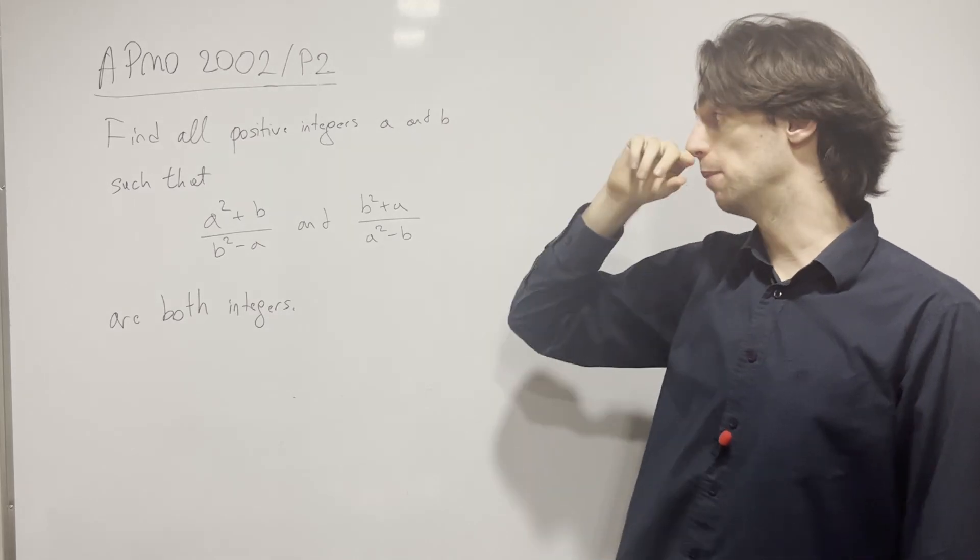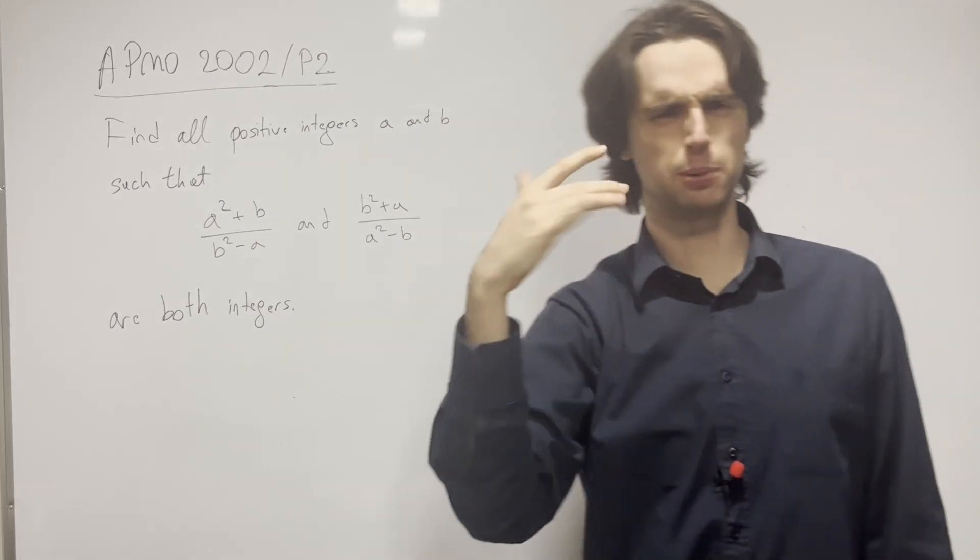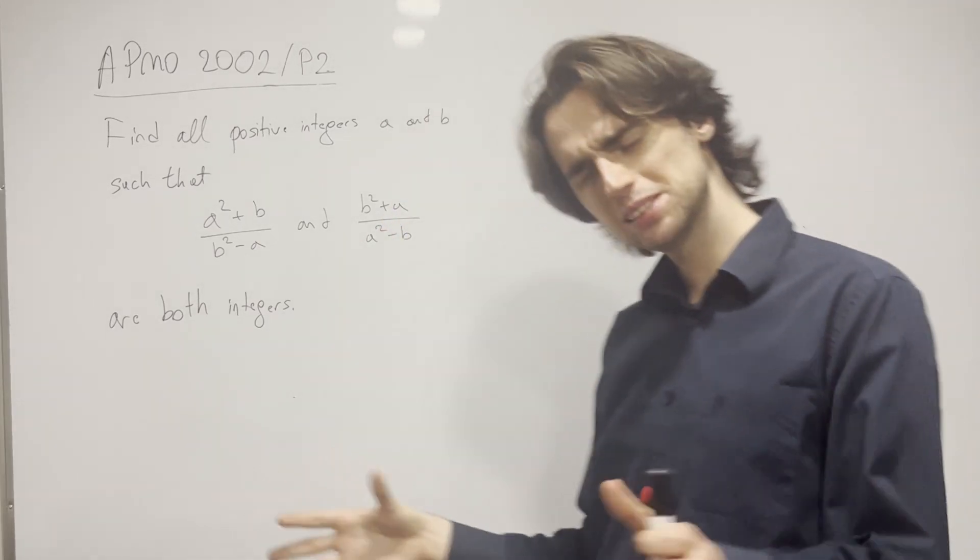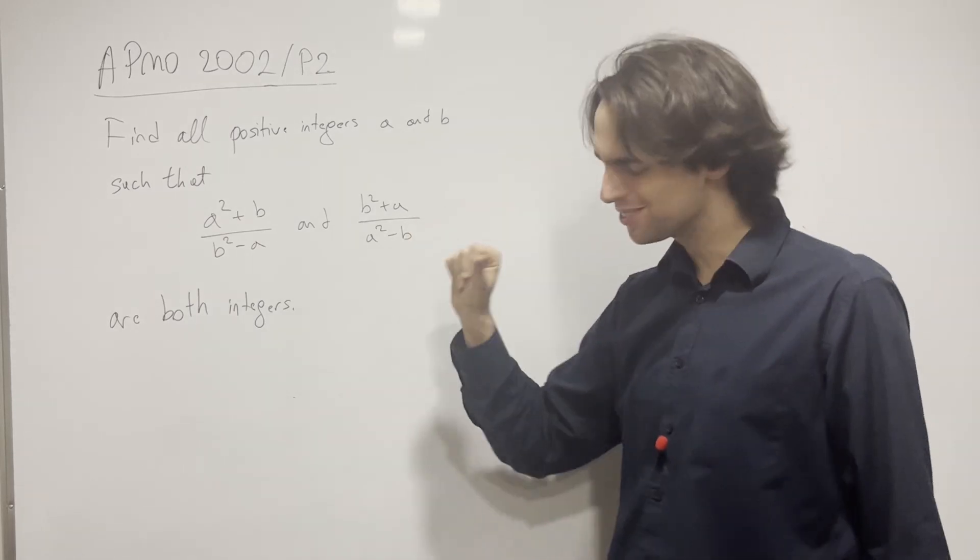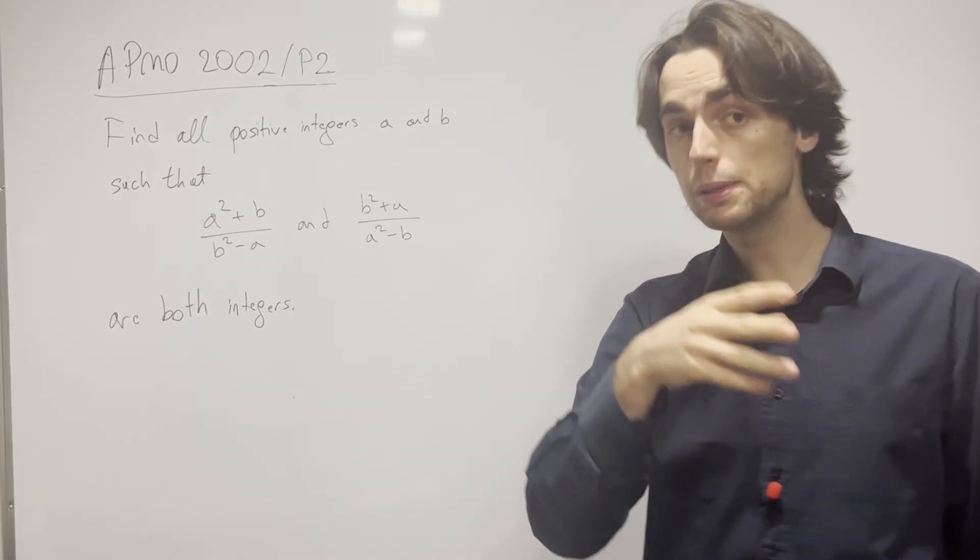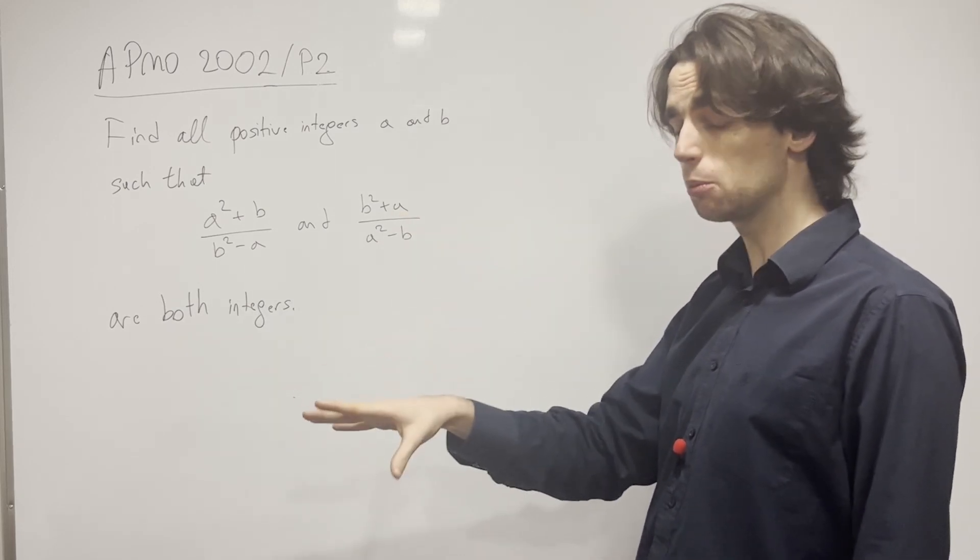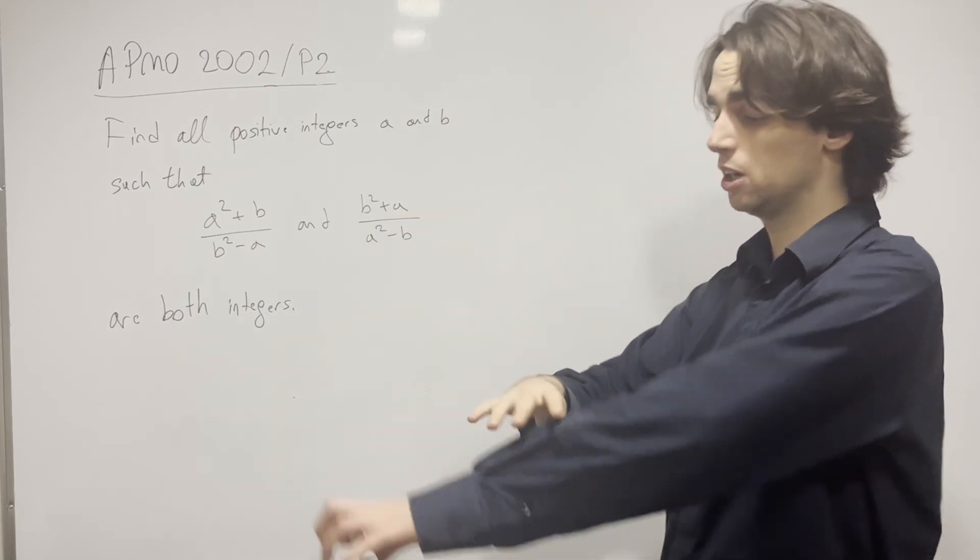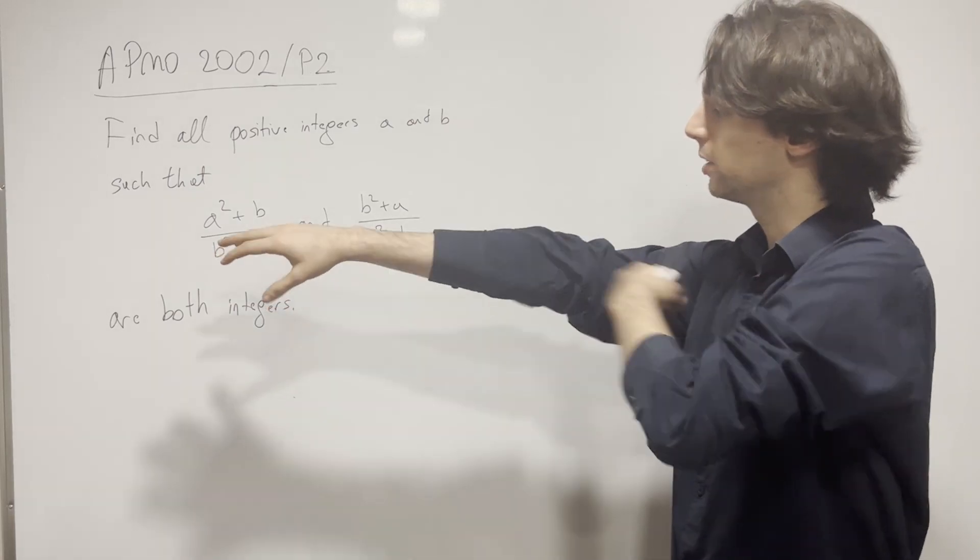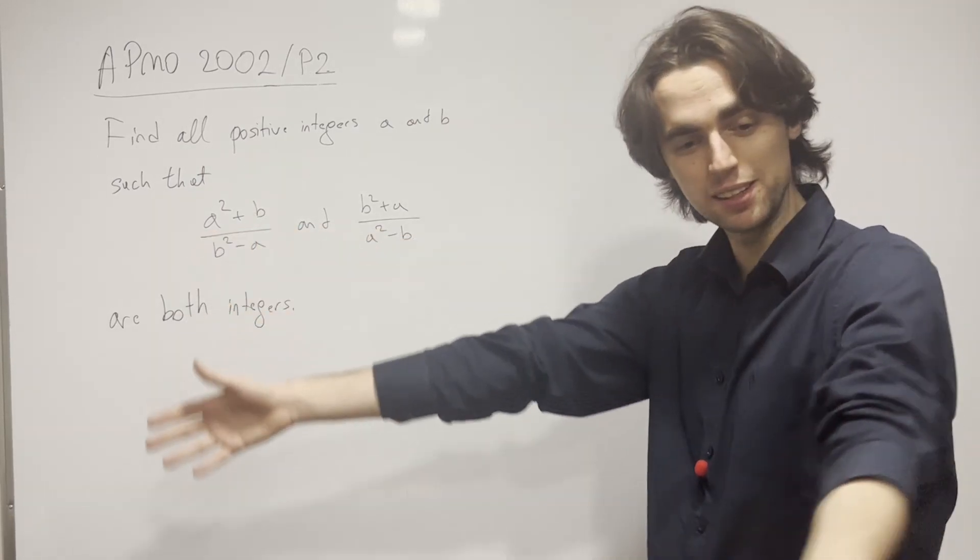I suggest you try this number theory problem out, especially if you're just getting more comfortable with divisibility. Try it out for a minimum of 20 minutes, ideally 45 to an hour, not more than 90 minutes. If you'd like to go along with us, give this a go for the next 10 minutes and now let's begin.